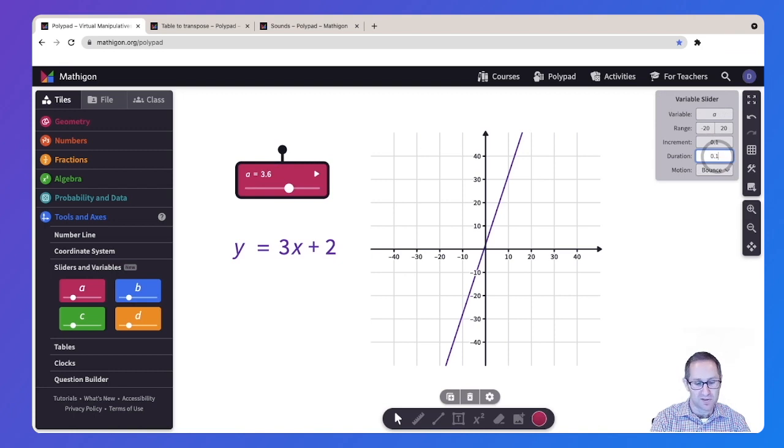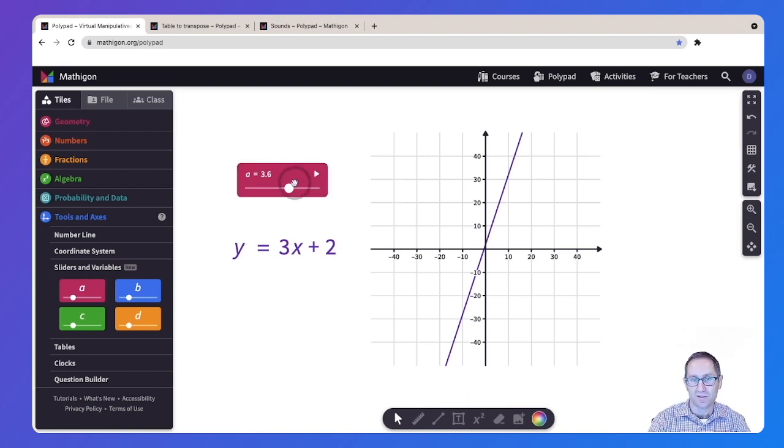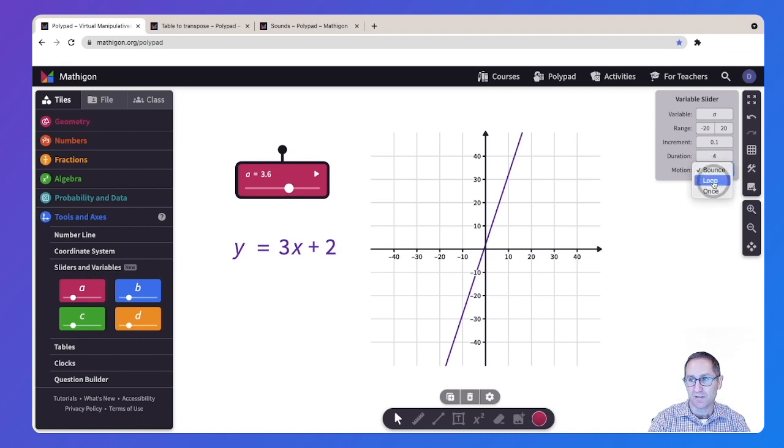If I wanted to go slower, I could change that to four. If I wanted to do a loop instead of bouncing, I could loop it. And you can see at the end of this, it'll loop back to the beginning. That's going much slower. I could pause it here. Let's go back to a duration of two. Maybe I want it, instead of an increment of 0.1, I want it going up by one every time.